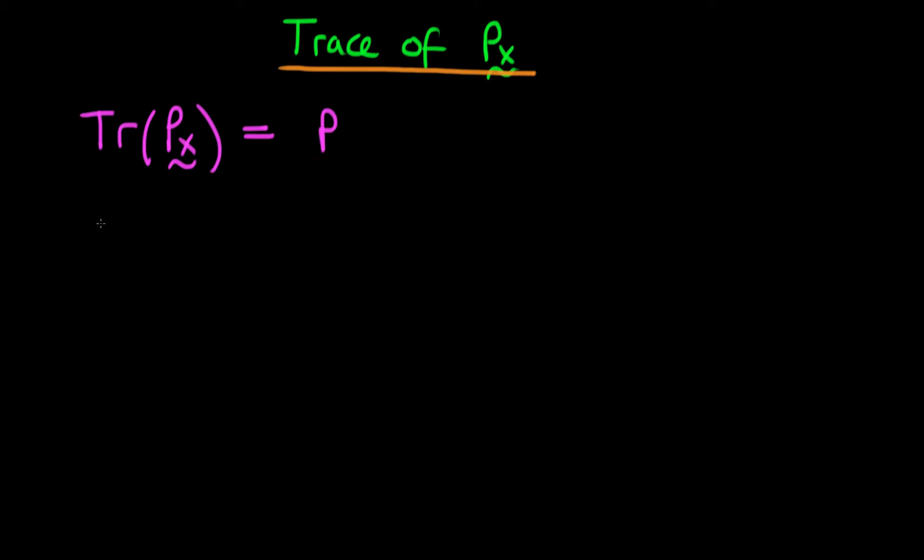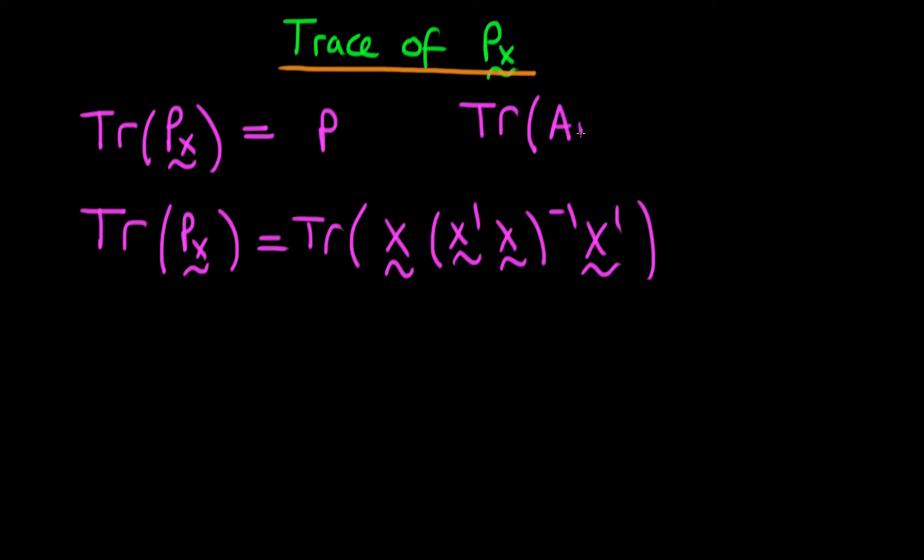And I wanted to explain why this is necessarily the case. Well, if we think about what the trace of Px is, the trace of Px is equivalent to the trace of the definition of Px, which is just x times x' x all to the power minus 1 times x'. And it turns out that the trace operator is actually invariant under cyclic permutations.